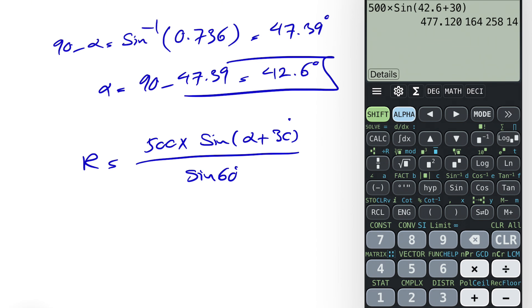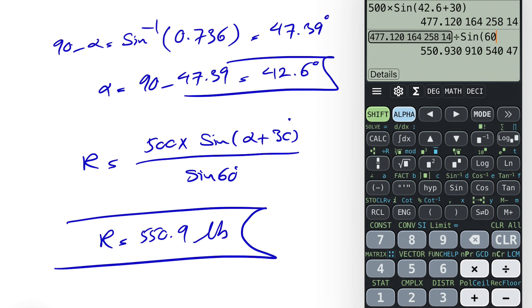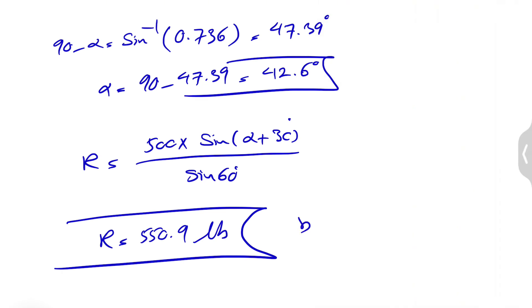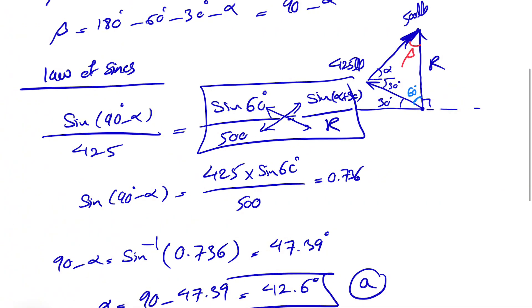And we're going to divide that by sine of 60, and our R would be 550.9 pounds. That would be the answer for part b. Alpha was the part a answer.